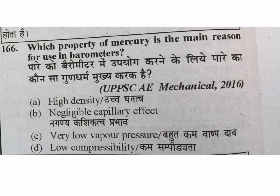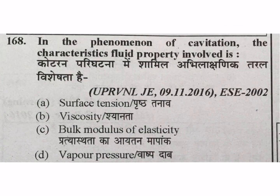Next question: which property of mercury is the main reason for its use in a barometer — high density, negligible capillary effect, or low vapor pressure? C — low vapor pressure — is your correct answer. Next question: in the phenomenon of cavitation, the characteristic fluid property involved is — surface tension, viscosity, bulk modulus of elasticity, or vapor pressure? D is your correct answer.